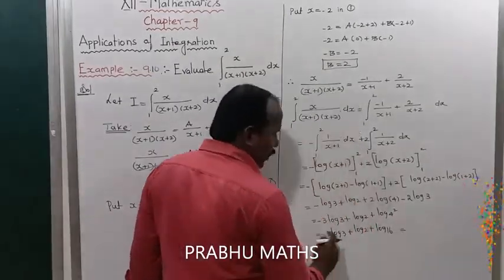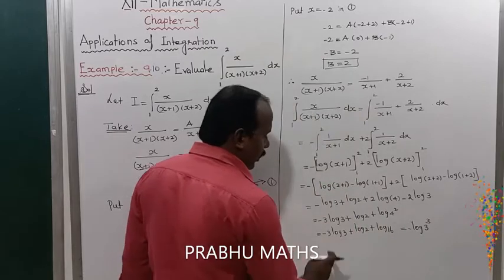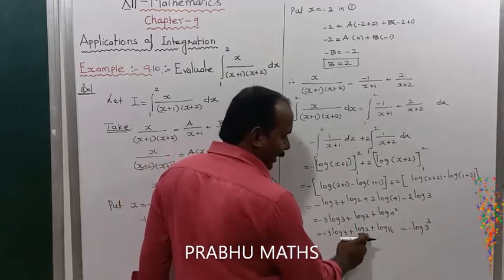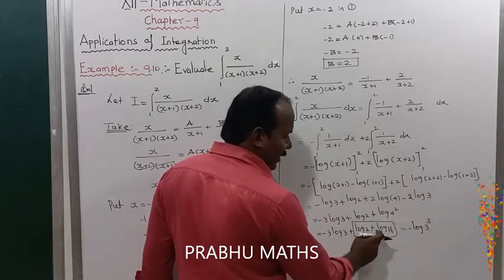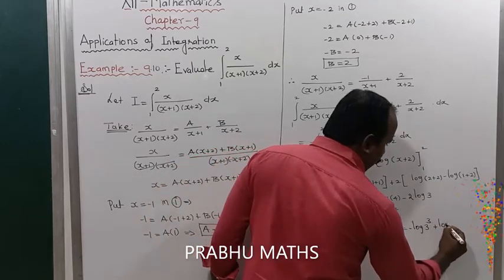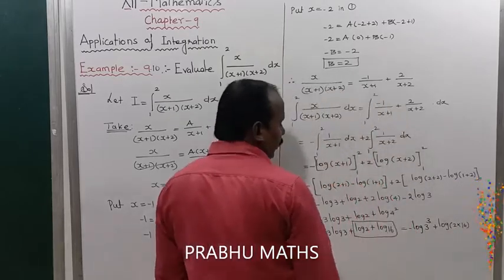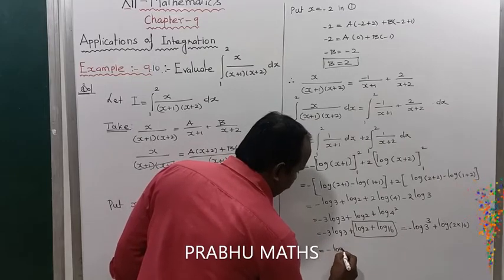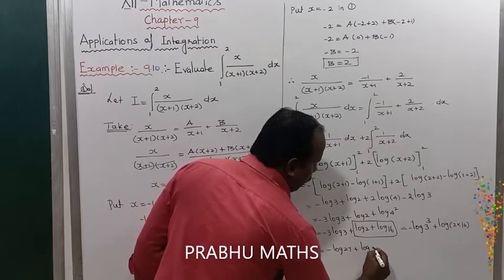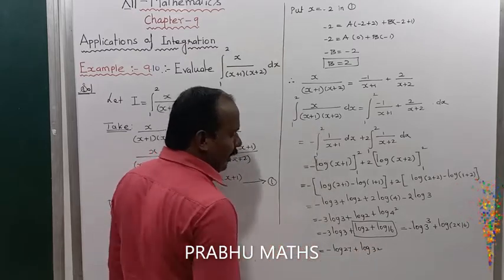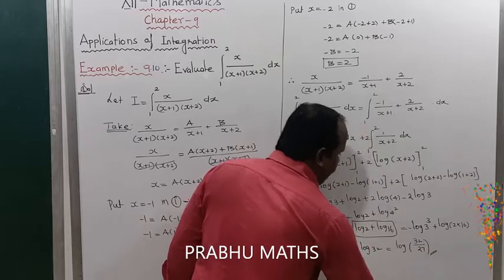That is equal to -log(3³), that is -log 27. Applying the formula log m + log n = log(mn) to the remaining two terms, we get log(2 × 16) = log 32. Then applying log m - log n = log(m/n), we get log(32/27). That is the final solution.